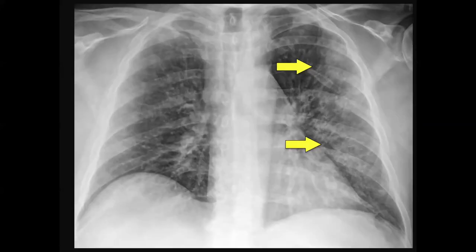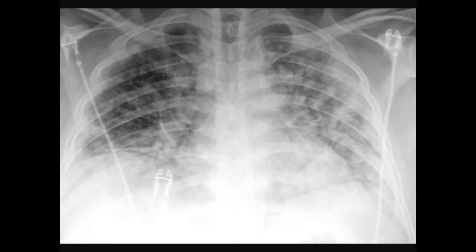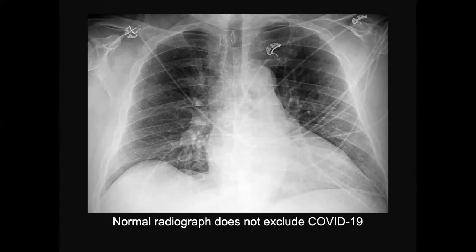This one was more unilateral — a little more unusual — with fairly extensive lung disease on the left. There probably was some on the right that you could see on CT, but it wasn't apparent on this radiograph. And then finally, a more diffuse case with very hypoinflated lungs, lots of patchy white stuff with an almost nodular configuration. Those are little areas of organizing pneumonia superimposed on each other. This patient tested positive for COVID-19, and a normal radiograph does not exclude COVID-19.